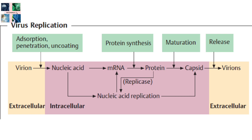The second stage is penetration or viral entry, which follows attachment. Virions enter the host cell through receptor-mediated endocytosis or membrane fusion. The infection of plant and fungal cells differs from that of animal cells — plant cells have a rigid cell wall of cellulose and fungal cells have one of chitin, so most viruses can only enter these cells after trauma to the cell wall. The third stage is uncoating — a process in which the viral capsid is removed, either by viral enzymes, host enzymes, or simple dissociation — resulting in the release of the viral genomic nucleic acid.